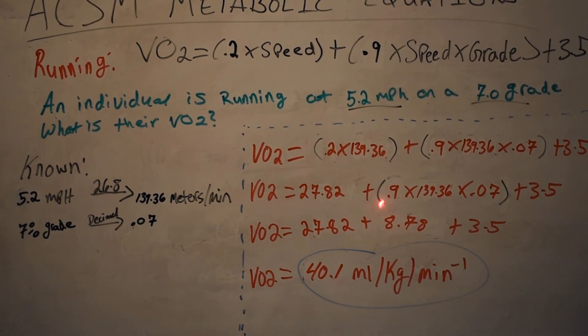So now all you have to do is add these three values together and you have your answer: 40.1 mls per kg per minute.